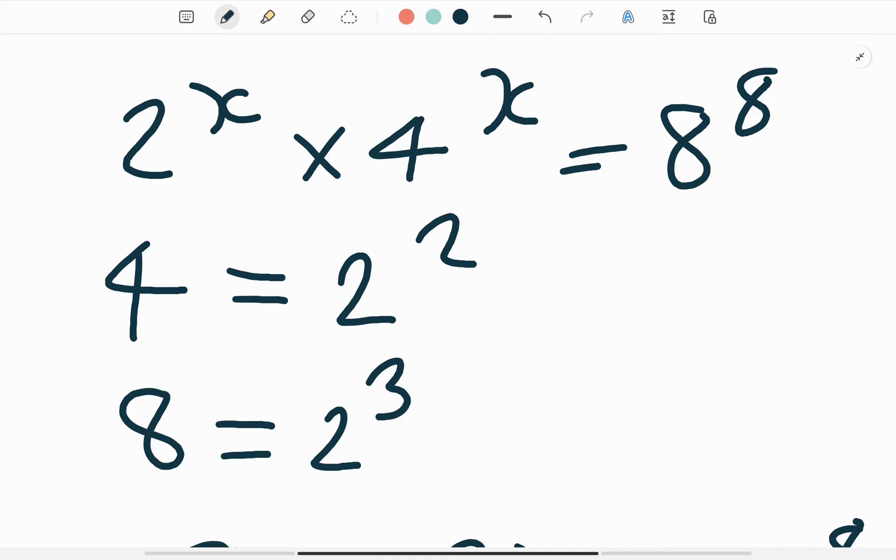In this question, we find the value of x. Given 2 to the power x multiply 4 to the power x is equal to 8 to the power 8.